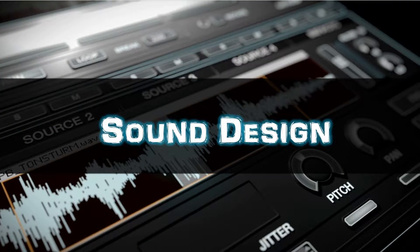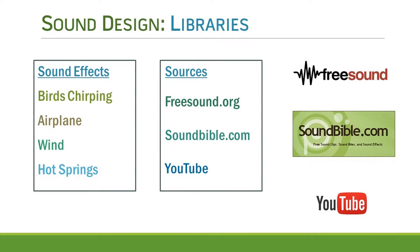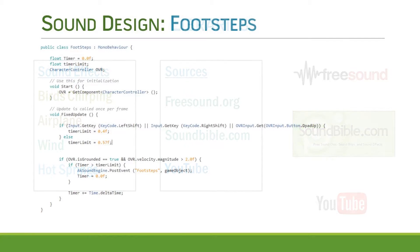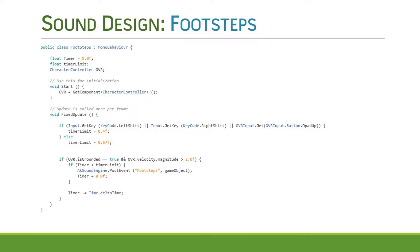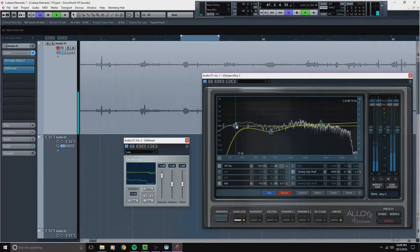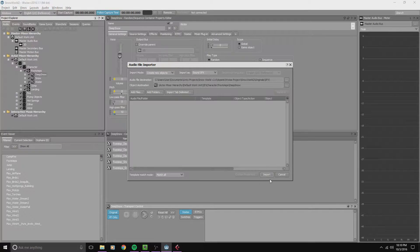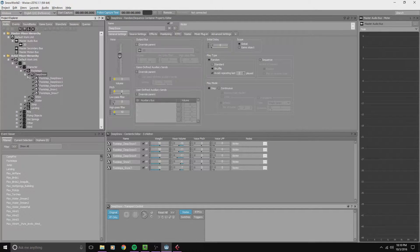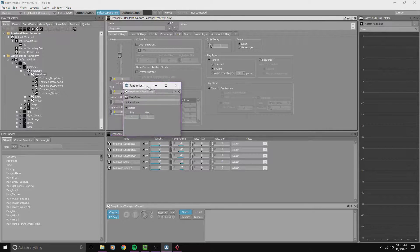I recorded my own footsteps for surfaces like gravel and water, and used libraries for other effects like birds chirping and the airplane engine. For the footsteps, I wrote a script to send out game calls every 0.4 seconds if the player is sprinting, or every 0.57 seconds if the player is walking. The individual footstep sounds were trimmed and processed in Cubase, then loaded in a random container in Wwise using the shuffle play type, and enabling randomizers on volume, pitch and filters to avoid as much repetition as possible.